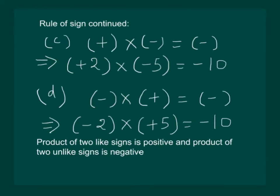Hence, we conclude that the product of two factors with like signs is positive, and the product of two factors with unlike signs is negative.